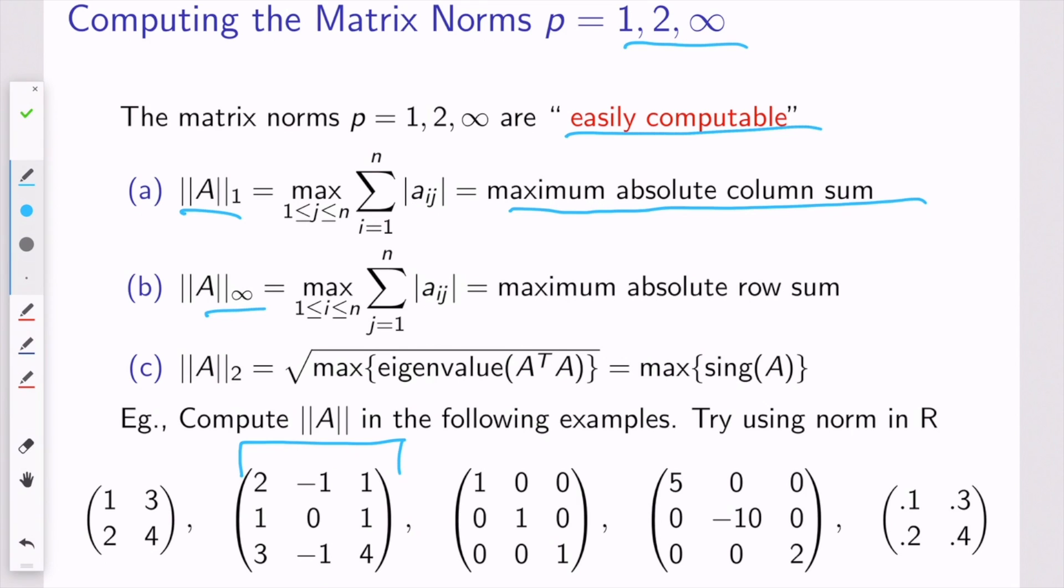And then the 2 norm turns out to be the square root of the maximum eigenvalue of A transpose A. And another name for the eigenvalues of A transpose A is the singular values of A. You're going to learn more about this later in the course, but this turns out to be the definition. Again, this should not be obvious to you. But if you're interested in toying around with these, you can try to calculate some directly by hand, and you can check your work using the norm command in R.